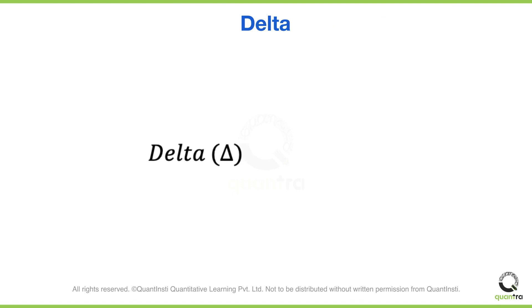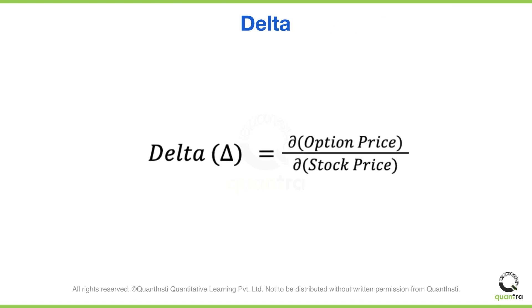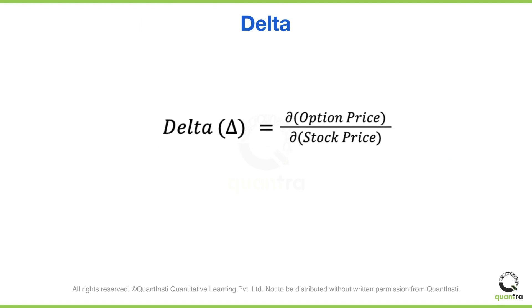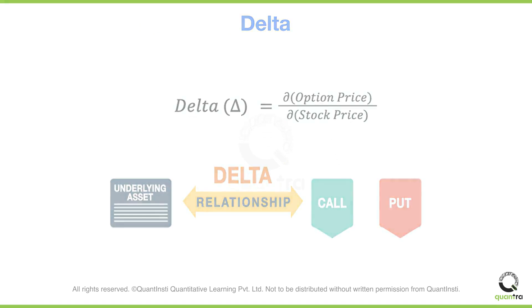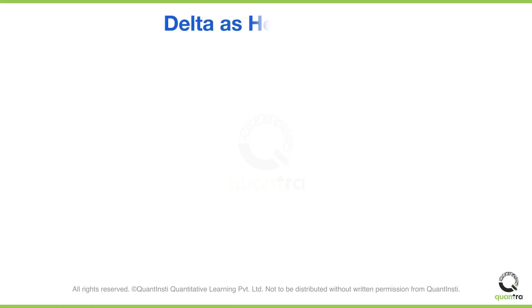Delta is defined as the partial derivative, in the calculus sense, of the option price with respect to the stock price. It is the most important Greek because stock moves are what can get us into trouble the fastest. But it is also the hedge ratio.